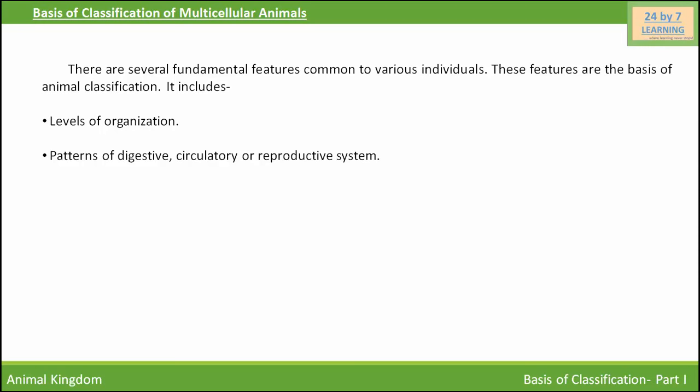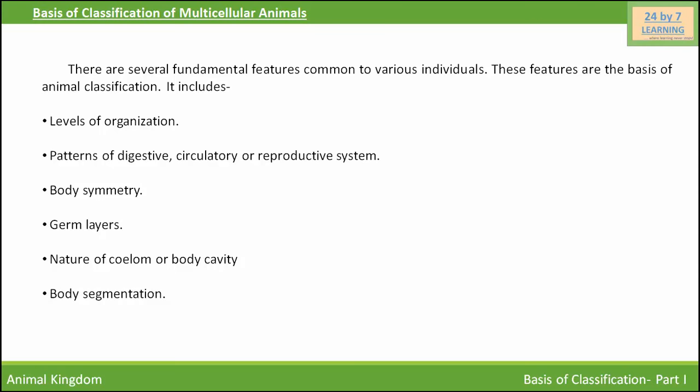These organ systems include the digestive system, circulatory system, and reproductive system. Next is body symmetry — animals may be asymmetrical, radially symmetrical, or bilaterally symmetrical. Other fundamental features include germ layers (diploblastic or triploblastic), nature of body cavity (acoelomate, pseudocoelomate, or true coelomate), body segmentation, and presence or absence of notochord.